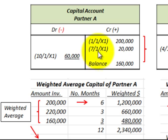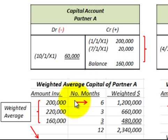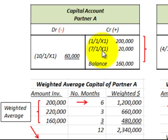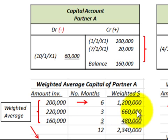Next, on 7/1/X1 there was a $20,000 increase, and then on 10/1/X1 there was a $60,000 decrease. The cumulative amount after the increase was $220,000, and they held that for three months from 7/1/X1 until 10/1/X1. So we take $220,000 times three months, giving us $660,000.